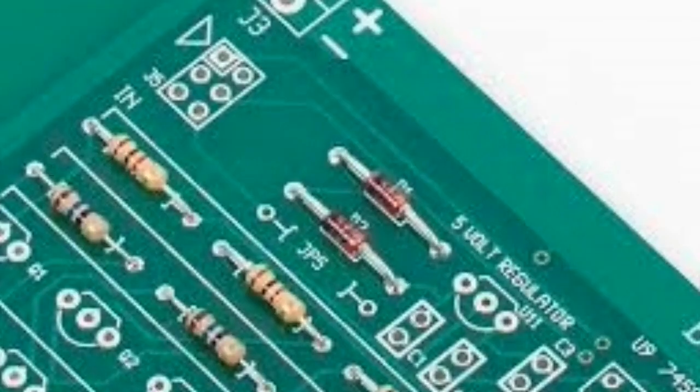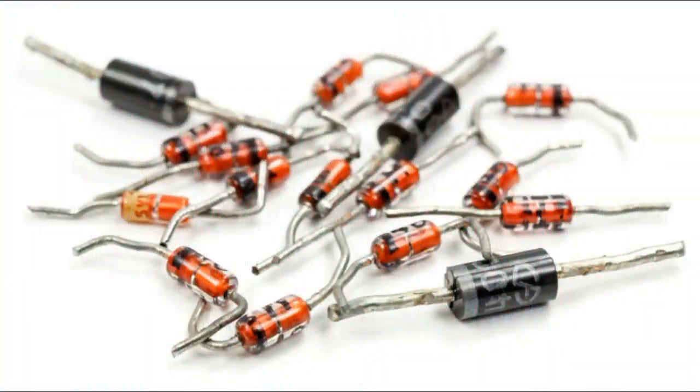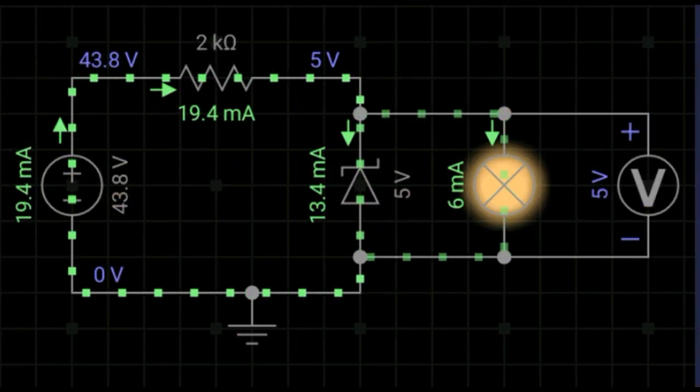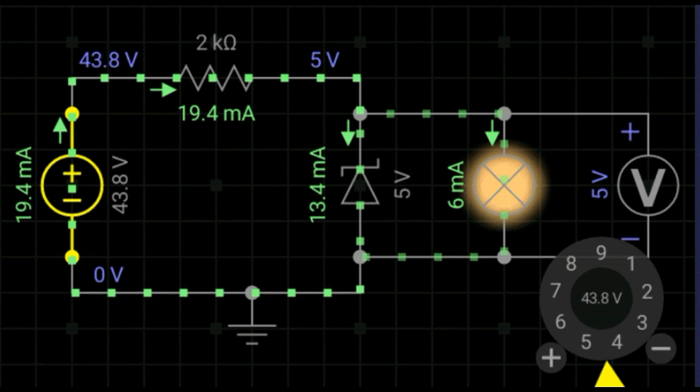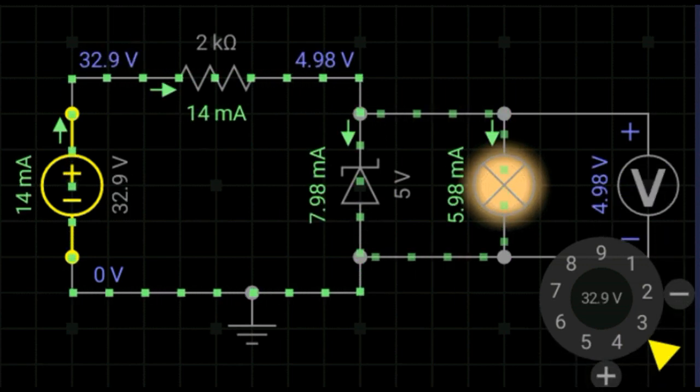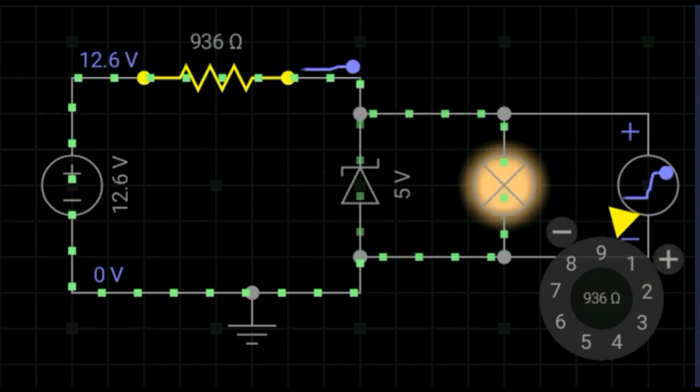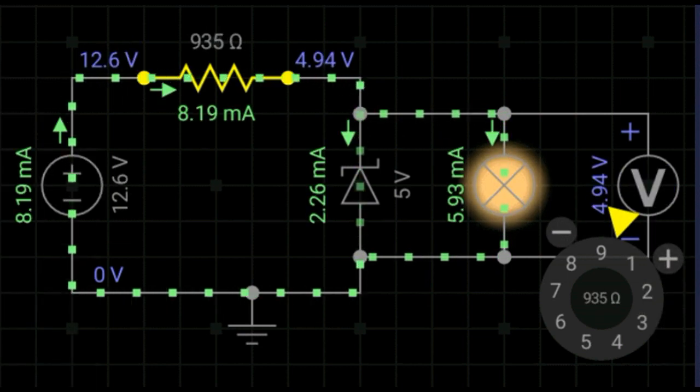Zener diodes can be used to produce a constant output voltage with low ripple under variable load current conditions. By passing a small amount of current from the voltage source to the diode through a suitable current limiting resistor, the Zener diode is able to pass enough current to maintain the voltage drop.